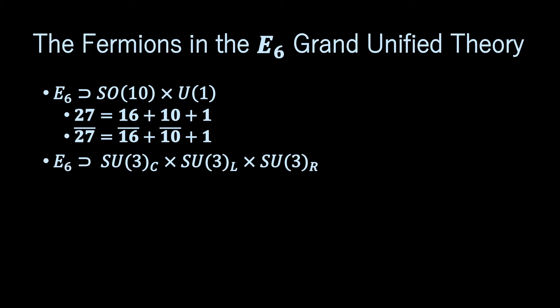The exceptional group E6 has maximal subgroup SO(10) × U(1). Its fundamental representation branches as 27 = 16 + 10 + 1, where 16 is the spinor representation and 10 is the vector representation of SO(10). The 16 can accommodate one left-handed generation of the standard model, including a sterile neutrino. Similarly, the 16-bar can accommodate one right-handed generation. The representations 10, 10-bar, and 1 correspond to new fermions that so far have not been detected.